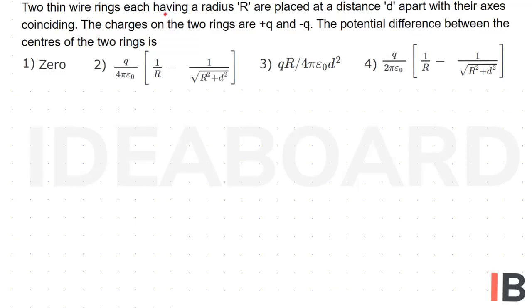Two thin wire rings each having a radius R are placed at a distance d apart with their axes coinciding. The charges on the two rings are +q and -q. The potential difference between the centers of the two rings is: